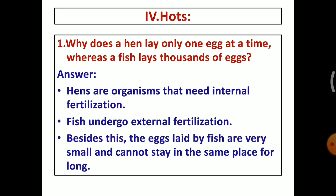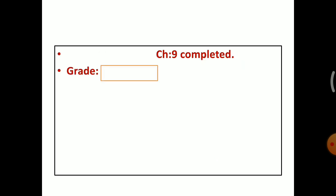So this is one of the reasons the fish lays thousands of eggs at a time. And also fish undergo the external fertilization but the hens undergo the internal fertilization. I hope you understood. After completing this question you have to draw a line. Then write chapter number 9 completed. Thank you.